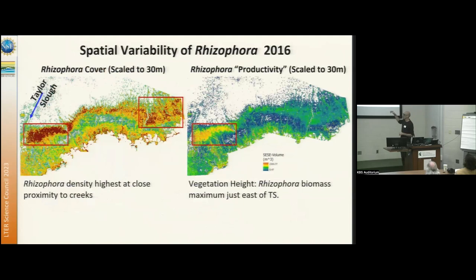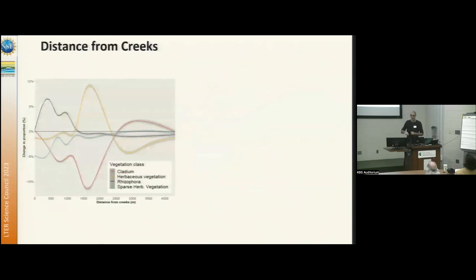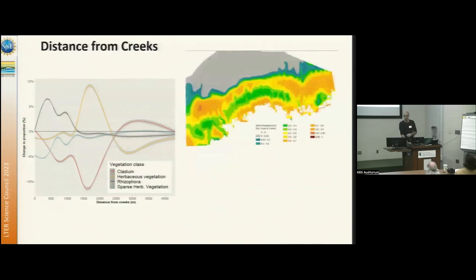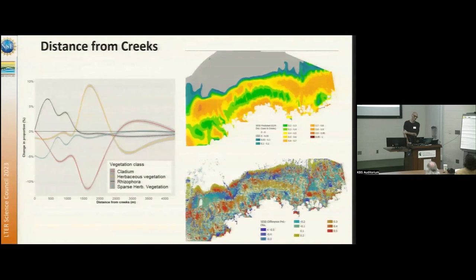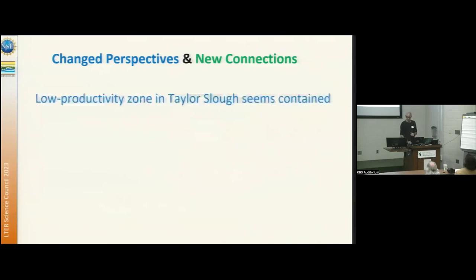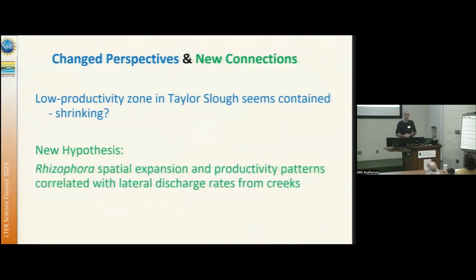High productivity is confirmed from LiDAR data — trees are not just denser but also taller close to freshwater. Looking at distance from creeks, mangrove cover increase is constrained to about one kilometer from the creeks. Combining predictions from distance from creeks and from coast into a model, we get a good resemblance of current mangrove cover, with residuals informing new hypotheses. It seems we're not losing more ground in the white zone — it may even be shrinking. The new hypothesis is that mangrove spatial expansion and productivity patterns are probably correlated to freshwater discharge, which we are now seeking hydrological data to confirm.